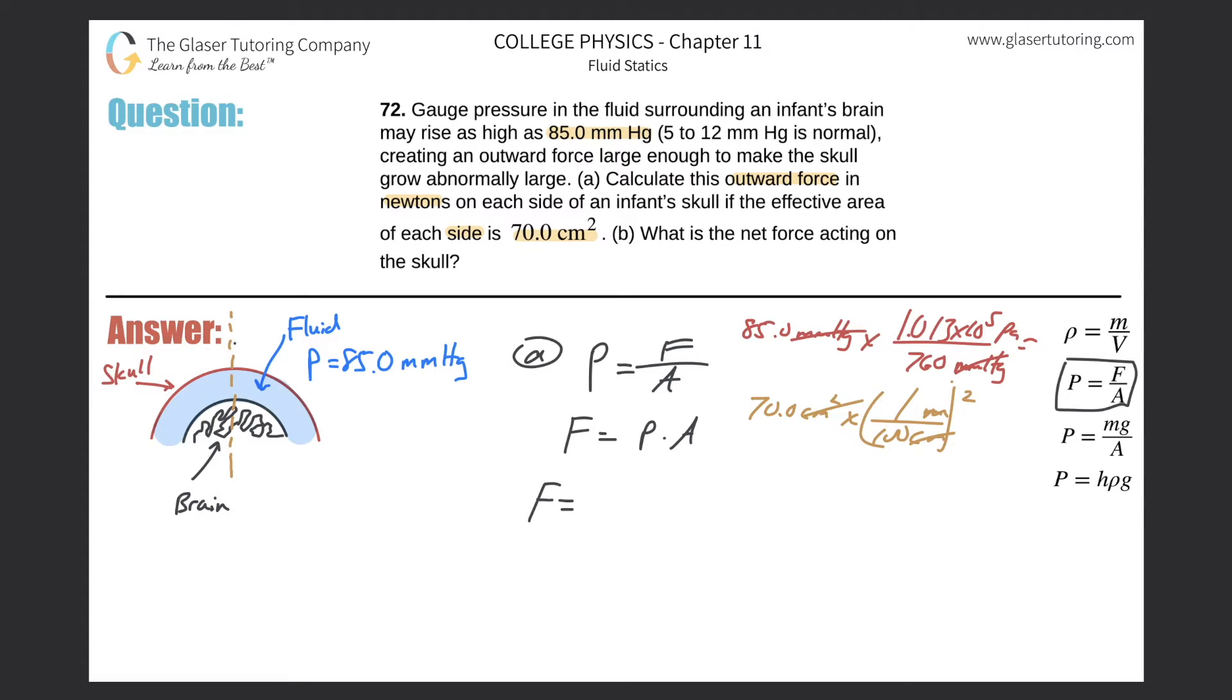Now we can plug everything in. The pressure was 85.0 times 1.013 times 10 to the fifth pascal, all divided by 760, and then multiplied by the area which is 70.0 all over 100 squared. Take out the calculator and plug it in: 85 times 1.013 times 10 to the fifth divided by 760, take that result, multiply it by 70 divided by 100 squared. We get a value of about 79.3 newtons. That will be the outward force on each side of the brain.